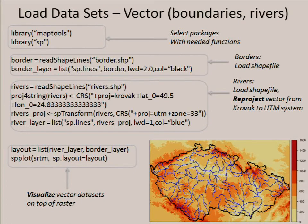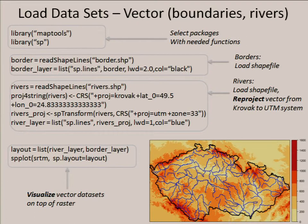The next example is a little more complex. It shows how to load vector data — by vector I mean country boundaries or rivers. In the first case, we directly load the rivers using functions in the maptools package. In the second example, our data set is in a different coordinate system, and we can see R supports functionality to reproject our vector data to the desired coordinate system. Then last we organize these data sets into a layout and visualize them.